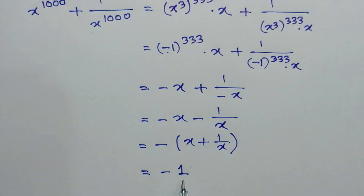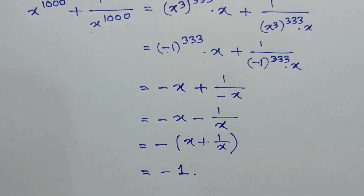So the value of x to the power 1000 plus 1 over x to the power 1000 is equal to negative 1. This is the solution to this problem. If you like this video, please subscribe to my channel. Thanks for watching.